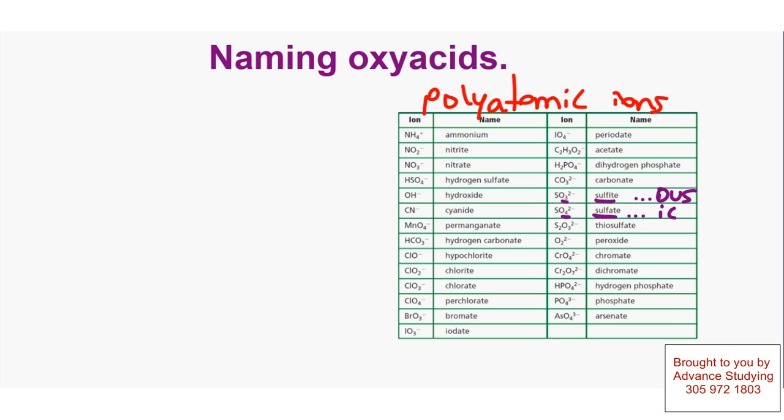Let's make a list of this. If I combine SO3 with H, this will become H2SO3 because it came from sulfite which has a charge of 2. The 2 went to oxygen. And this one will become H2SO4. So let's name those two acids. The first one, H2SO3, will become sulfurous acid.